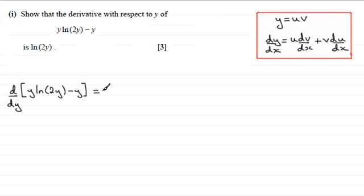So we take the first part y and now we've got to multiply it by the differential of the natural log of 2y. And to do this we need to use the chain rule.